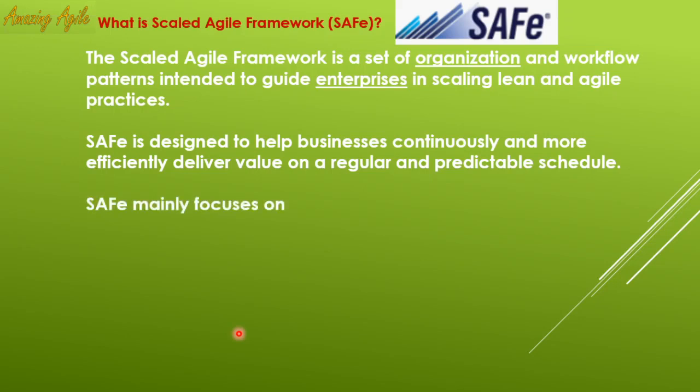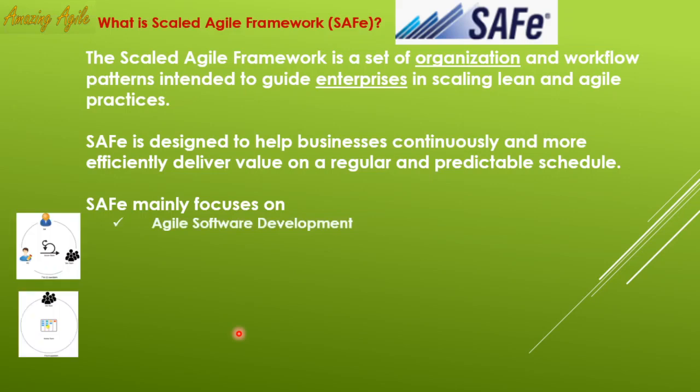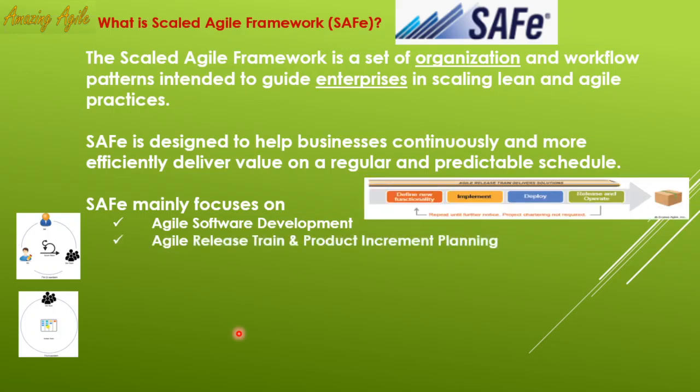SAFe mainly focuses on a few key points. Number one: agile software development — this is what you are already doing with regular Scrum and Kanban projects, so SAFe is built on top of that. Keep doing it while also keeping other SAFe points in mind. SAFe also introduces the Agile Release Train and PI Planning, which is Program Increment Planning — a new concept they have introduced.